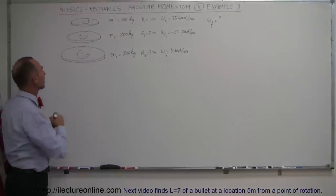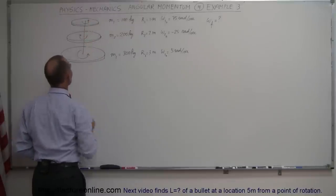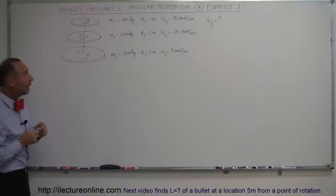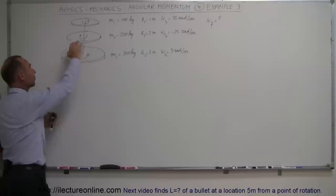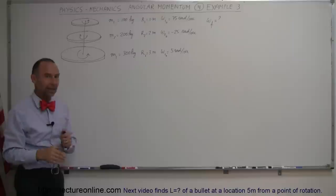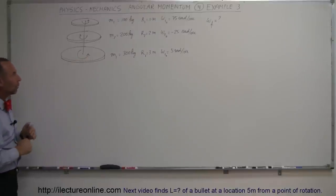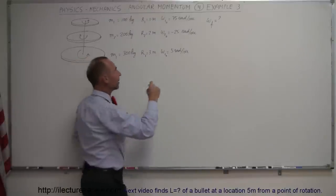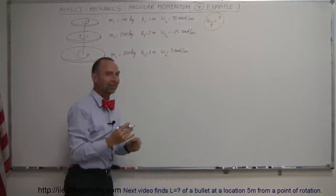So they're all independently spinning along a rod that connects the three. All of a sudden we allow whatever is holding them apart from touching each other to be removed, and all three disks slam together on top of the bottom disk. What would be the final angular velocity of the three disks when placed together?